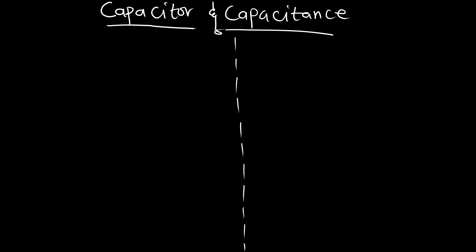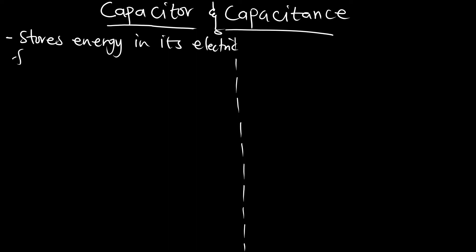In this episode we are going to talk about capacitors and capacitance. A capacitor is a passive element that stores energy in its electric field. Passive elements either store or dissipate energy, and capacitors store energy in their electric field. It has the capacity to store charges, which is what gives us energy.